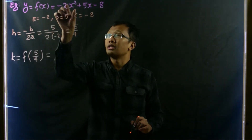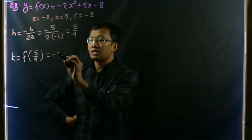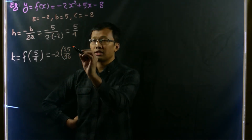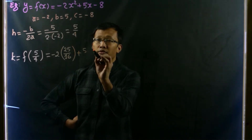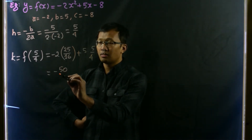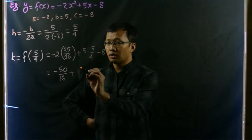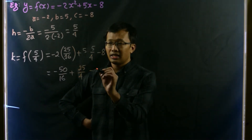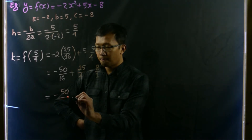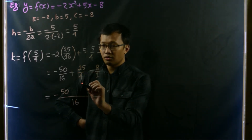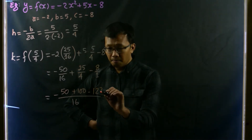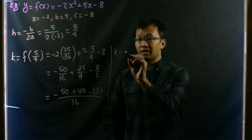Now k equals f of h, where h is five over four. Plugging five over four into the equation: k equals negative two times (5/4) squared plus five times (5/4) minus eight. That gives negative 50 over 16 plus 25 over 4 minus 8, which simplifies to k equals negative nine over two.